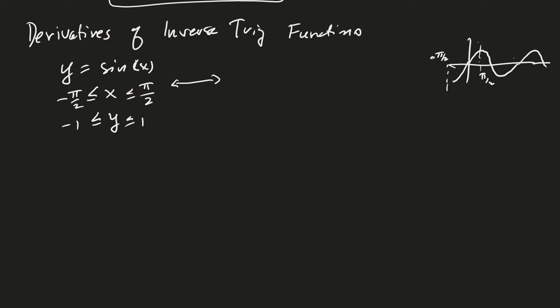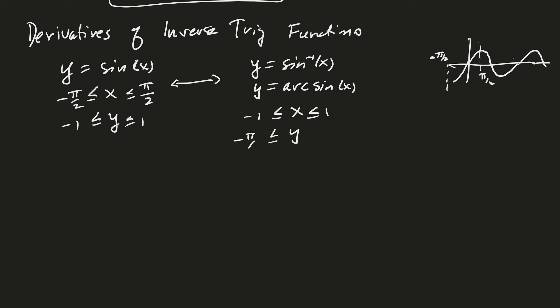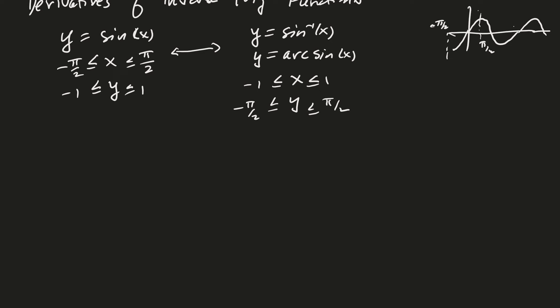The inverse function y equals inverse sine of x, also written as arcsin(x), has domain x between −1 and 1, and range between −π/2 and π/2. Now, I know the derivative of the sine function, but I need to find the derivative of the inverse sine.